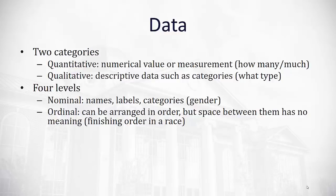The next level of data is ordinal data. This is data that can be arranged in order. However, the space between them has no meaning whatsoever. A great example of this would be finishing order in a race. First is ahead of second. Second is ahead of third. But the space between second and third may not be the same as the space between first and second. So this would be ordinal data. It can be put in order, but the space has no meaning.